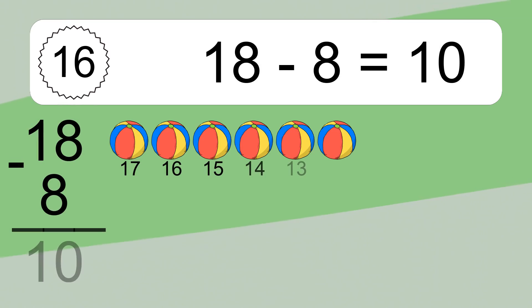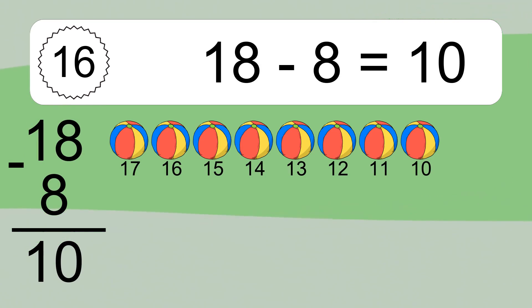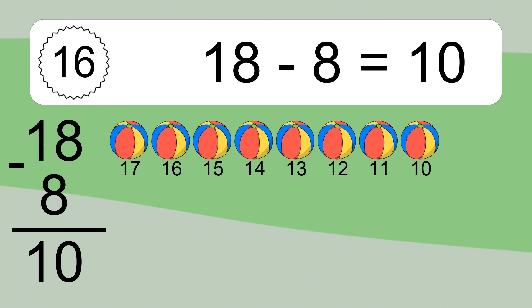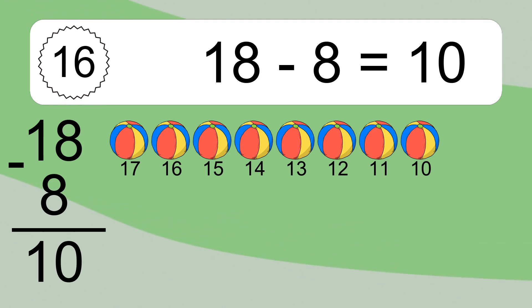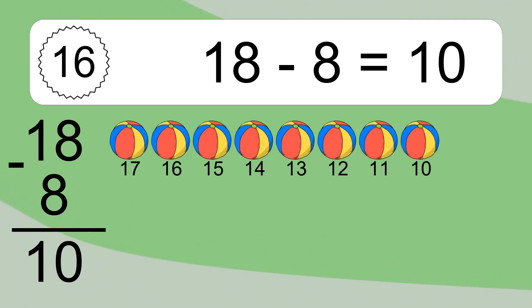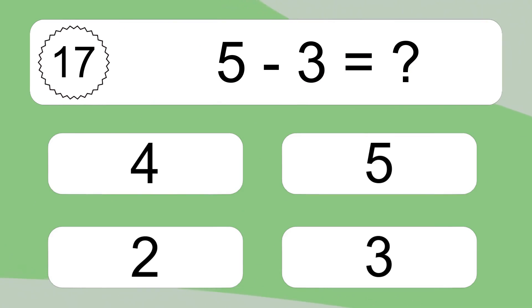18 minus 8 equals what? 18 minus 8 equals 10. Let's count it: 17, 16, 15, 14, 13, 12, 11, 10.